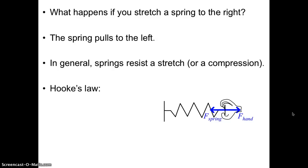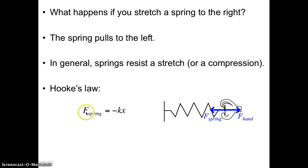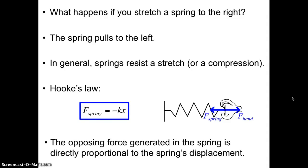Robert Hooke came up with an equation for calculating this spring force based on how much stretch or compression there was. In this equation, K is the spring constant and X is called the displacement, which is simply the amount that the spring has been stretched or compressed. The spring force is directly proportional to the displacement. So if you stretch the spring one meter, then stretch it to two meters, by doubling the displacement, you also double the spring force. That's what direct proportionality means.